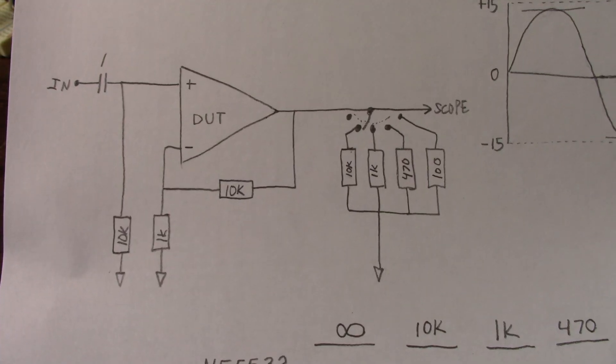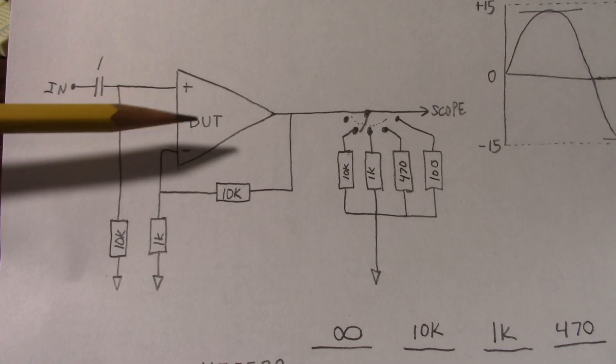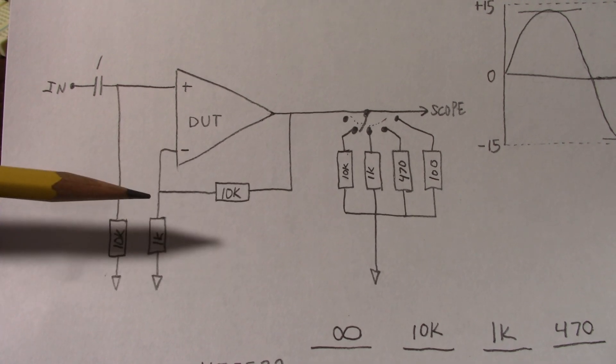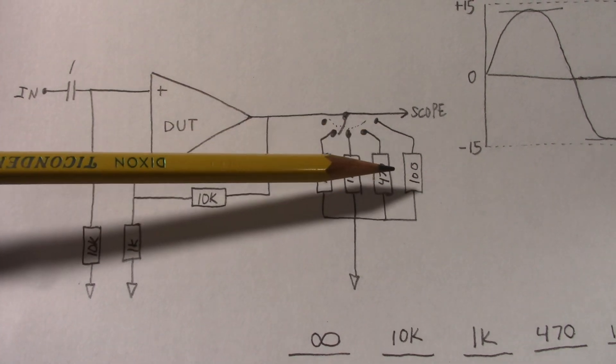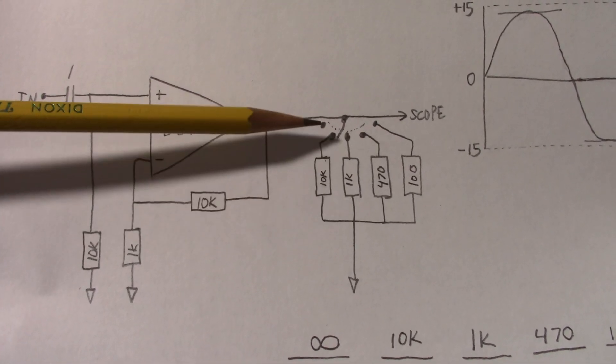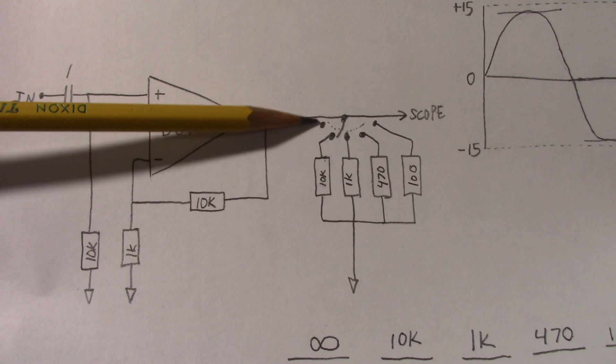So here's the circuit I'm going to use. It's just an amplifier set up with the gain of 11. Input signal goes here and on the output I have several resistors and a way to select between them.